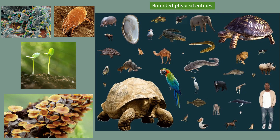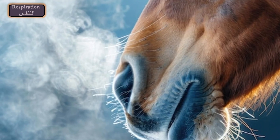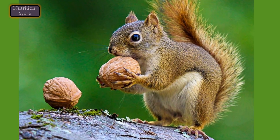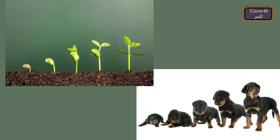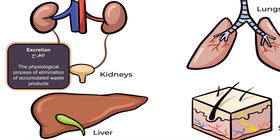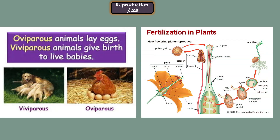Living things exert a complex array of biological processes, including respiration, nutrition, growth, excretion, and reproduction.